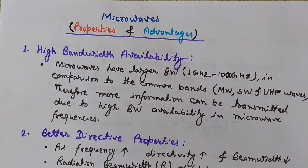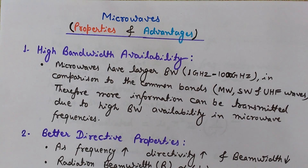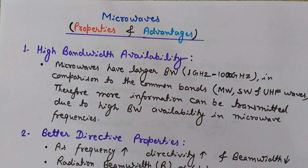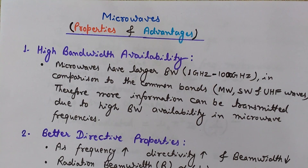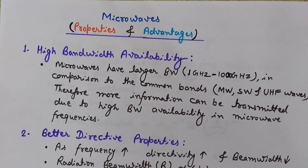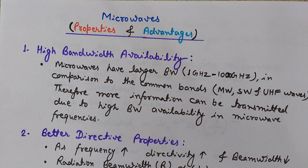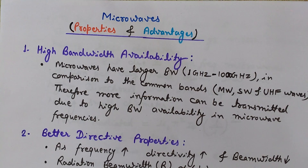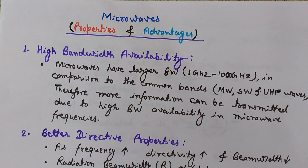Since the bandwidth of microwaves is very large, and we know that as the bandwidth of the wave increases its information carrying capacity increases, because of this high bandwidth they can carry more information in comparison to other waves that have lower frequency. This is a very important advantage of microwaves.